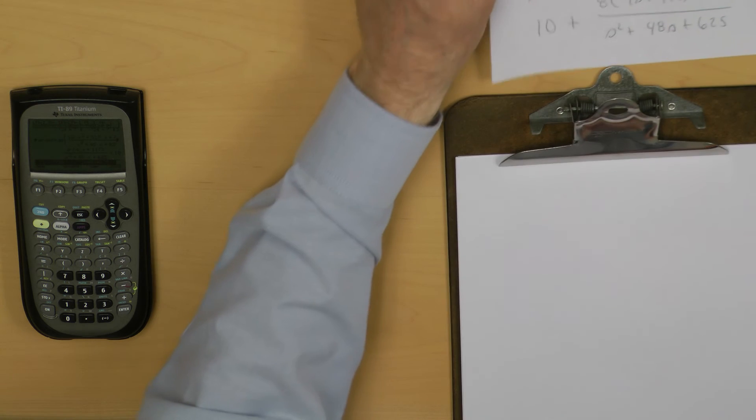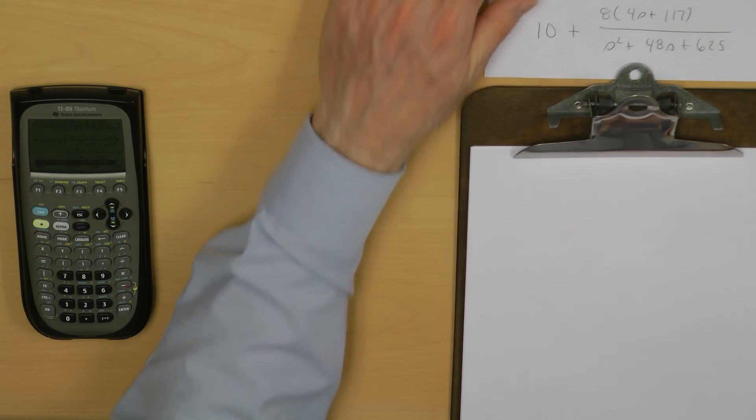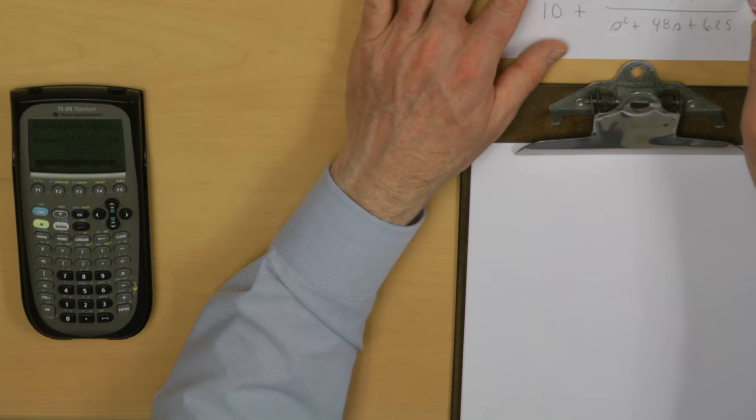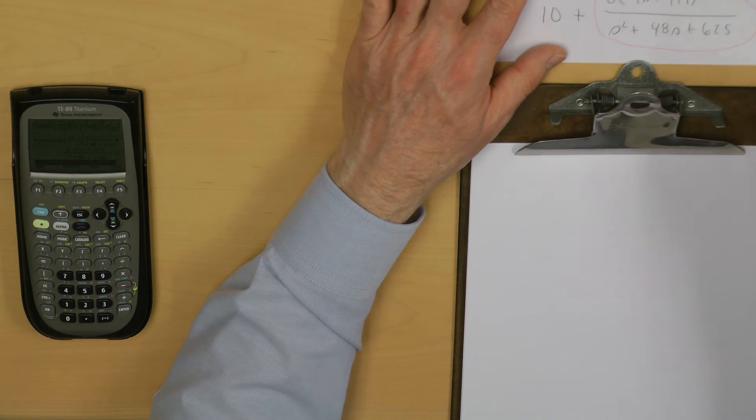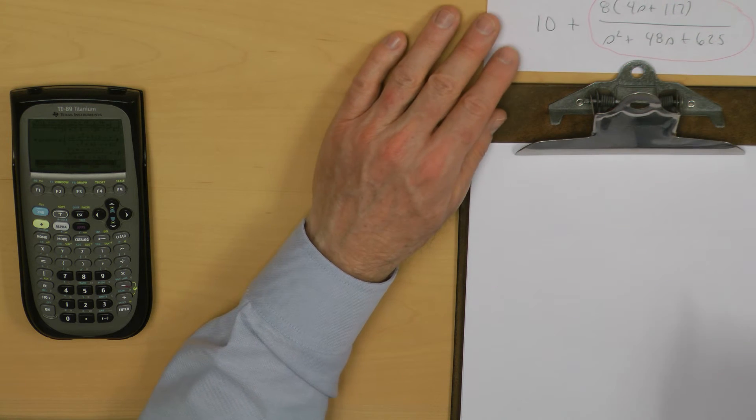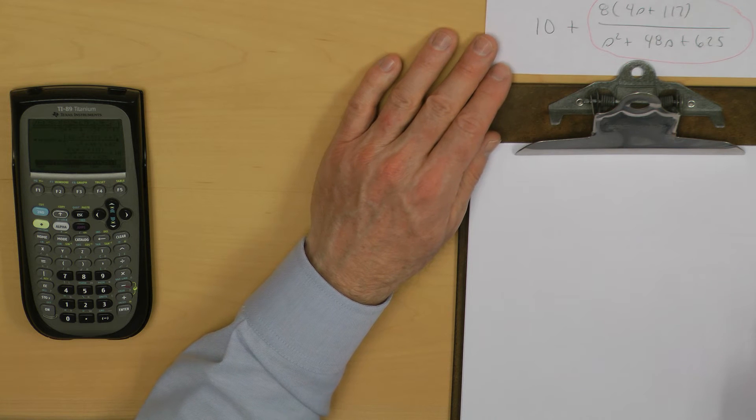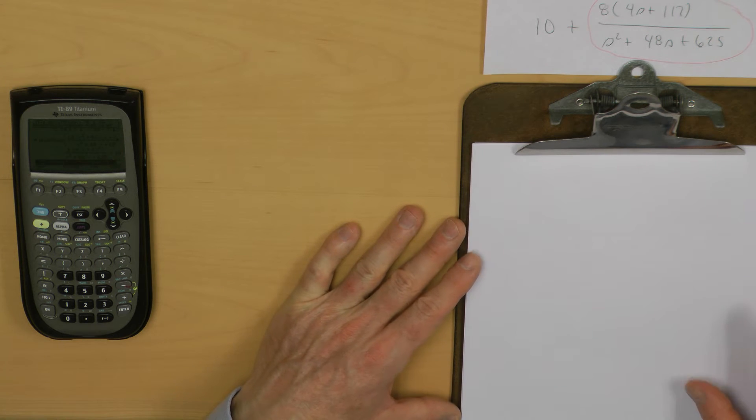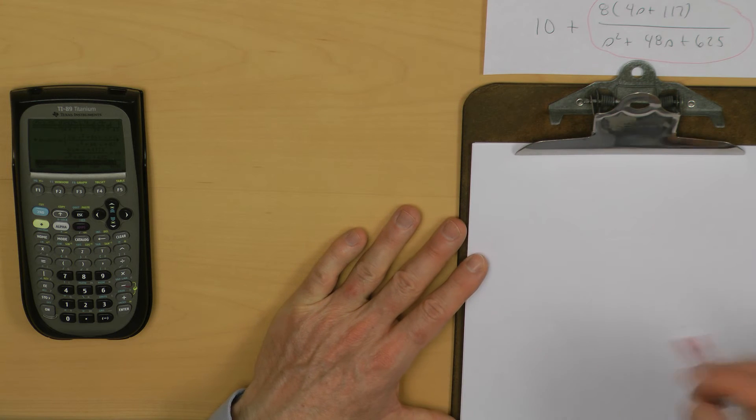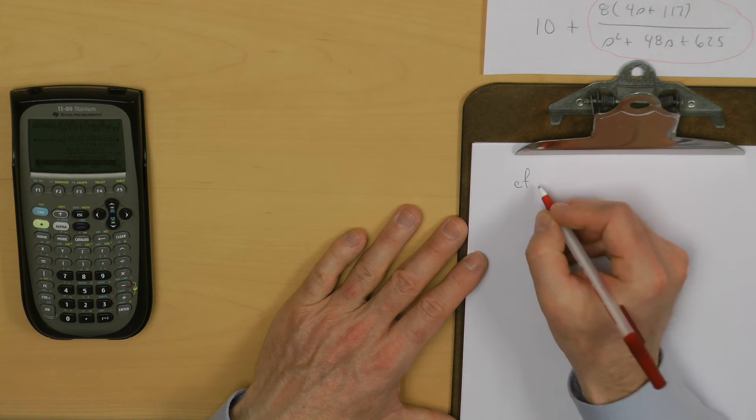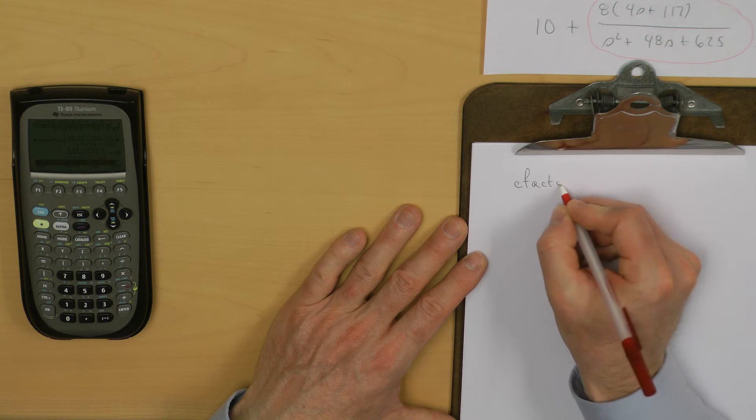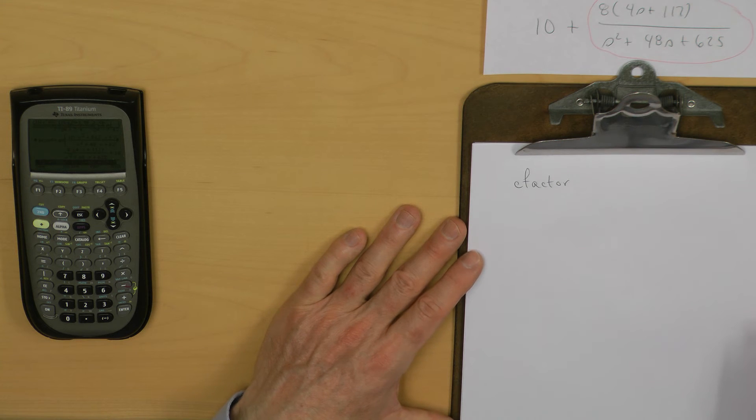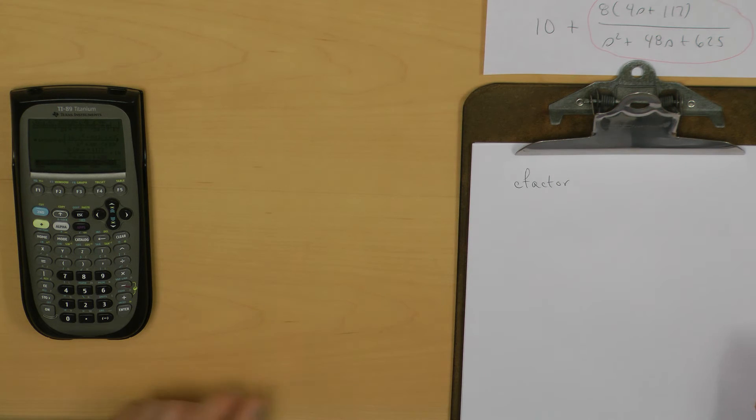If you were looking at the previous video, you might have seen that I used the factor operation on this proper fraction form. That actually now has complex roots, so I can't just use the factor. I actually have to use the complex factor or the C factor function in the calculator. Let me do that.